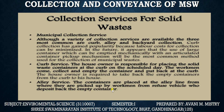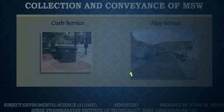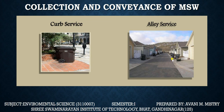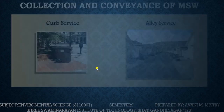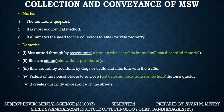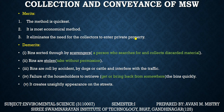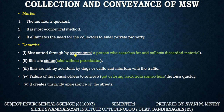In the alley service, containers are placed at the alley line from where they are picked up by the workmen from the refuse vehicle. The curbside service and alley service — this method is the most economical method. It eliminates the need for collectors to enter private property. A concern is that bins may be sorted through by scavengers — a person who searches for and collects discarded material.